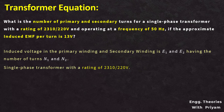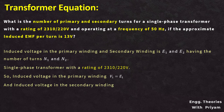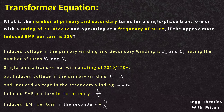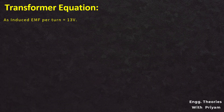The rating of the given single-phase transformer is 2310 by 220 volt. The induced voltage in the primary winding E1 equals the supply voltage V1, and the induced voltage in the secondary winding E2 equals the voltage across the load V2. The induced EMF per turn in primary equals E1 divided by N1, and in secondary equals E2 divided by N2. Since the induced EMF per turn is 13, we can write E1 by N1 equals E2 by N2 equals 13.